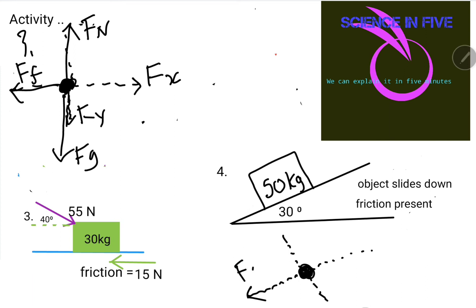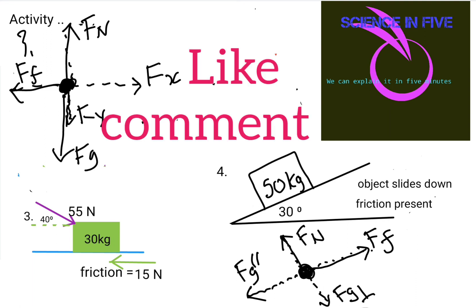So there I will have Fg parallel acting in that direction. Then I'll have the friction present pulling the object in that direction. Then I'll have the perpendicular component of the weight going down, and then to balance the perpendicular component of the weight is the normal force. So that's how you can draw free body diagrams to help you with your calculations. Thanks for watching.